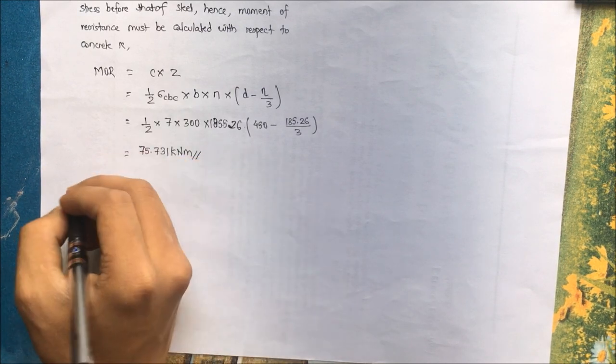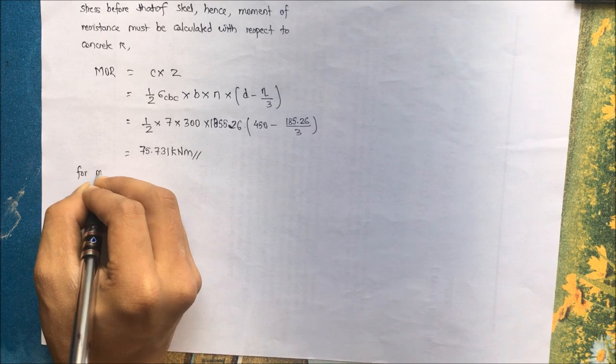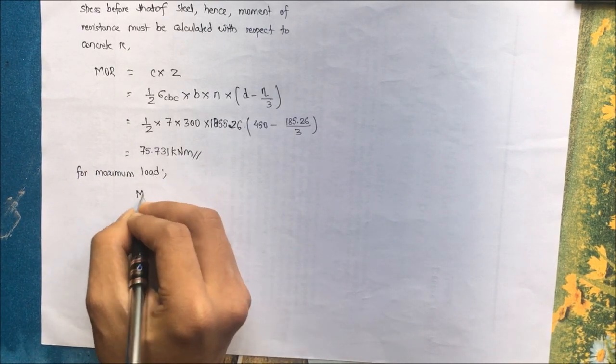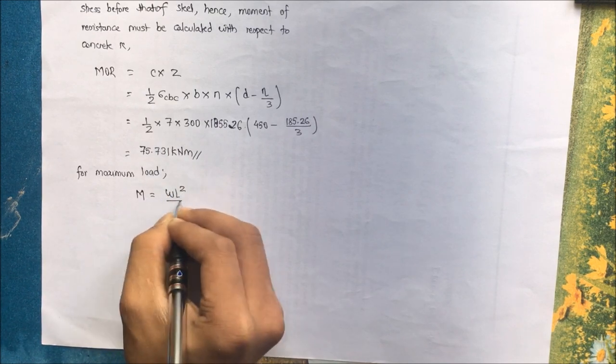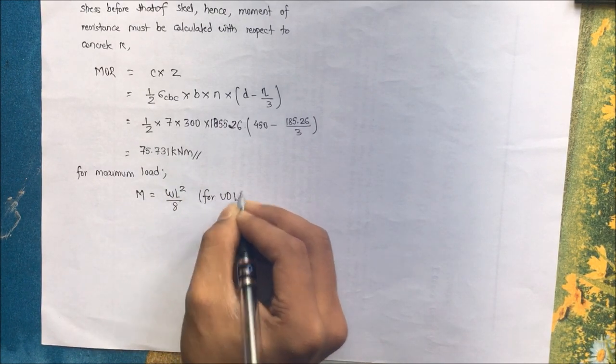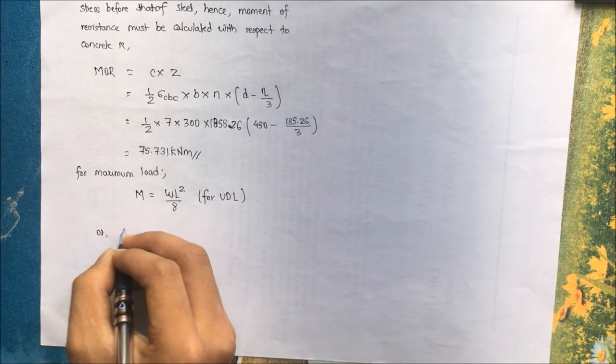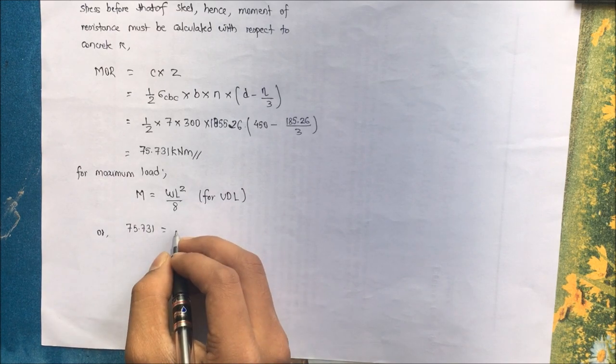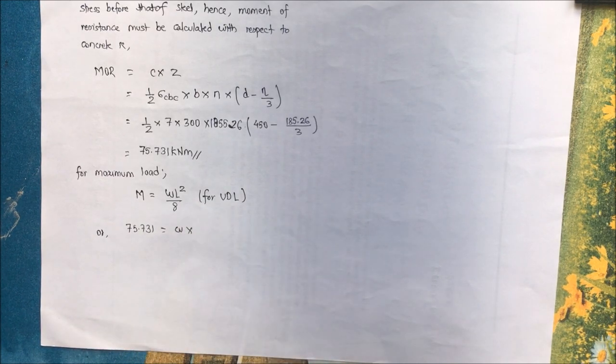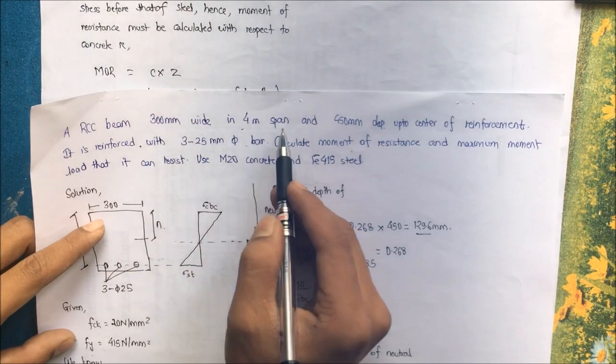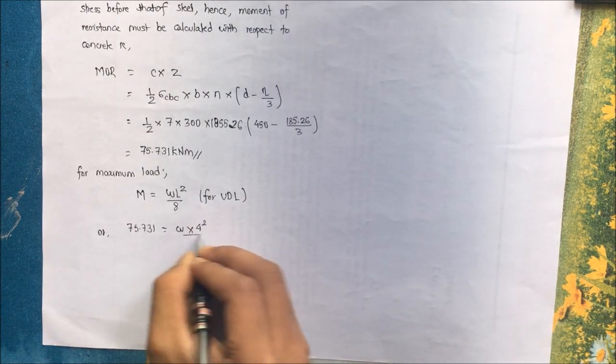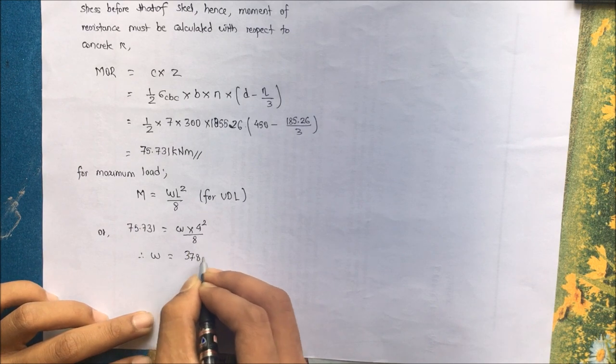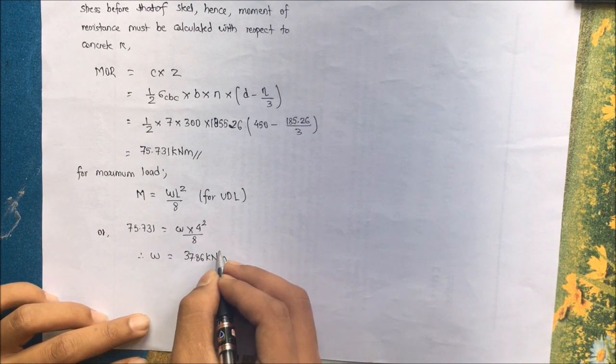Similarly, for maximum load that the beam can resist, M is equal to WL square by 8, being a UDL, okay, the load acting on the beam is considered to be a UDL. Here we have maximum moment as 75.731 kilonewton meter. W is to be found, so W into L, the question has given the length 4 meter, so into 4 square divided by 8. On solving we get the value of W as 37.86 kilonewton per meter.